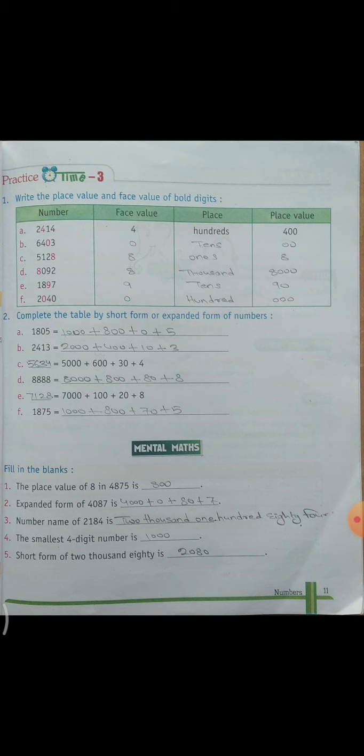Come to b part. B part ke andar dhe rakha hai 6, 4, 0, 3. Ab 0 ki place value. Sabse pehle face value bitaayi hai. 0 ki 0. Ab place iske kohon sa aeghi. Tens. And place value 00.